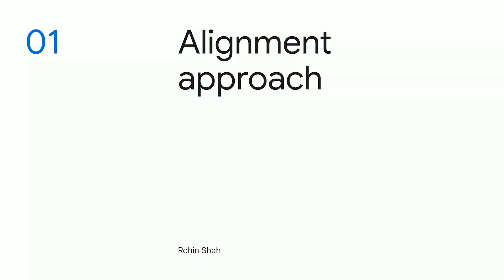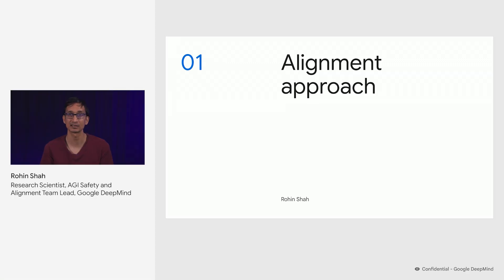Welcome to part two of our alignment course. I'm Rohan Shah, and I lead the AGI Safety and Alignment team here at Google DeepMind. In this part of the course, we're going to talk a little bit more about how we can solve misalignment problems. I'll give a bird's eye view of the landscape in this talk, and future talks will dive into each of the individual pieces.